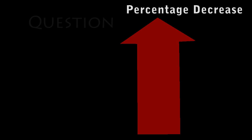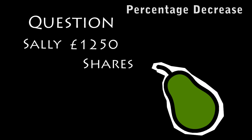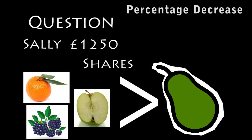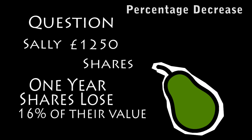Now we're going to look at decreasing by a certain percentage. Let's say that Sally buys £1,250 worth of shares in a company called Pair. Unfortunately for Pair, other technology companies are doing much better than them. Therefore, after one year, they lose 16% of their value.